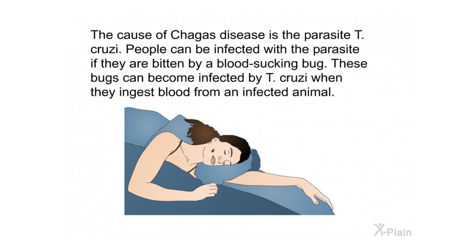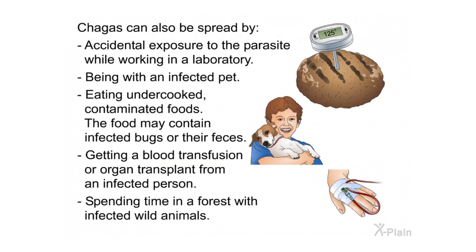The cause of Chagas disease is the parasite T. cruzi. People can be infected with the parasite if they are bitten by a blood-sucking bug. These bugs can become infected by T. cruzi when they ingest blood from an infected animal. Chagas can also be spread by accidental exposure to the parasite while working in a laboratory or being with an infected pet.